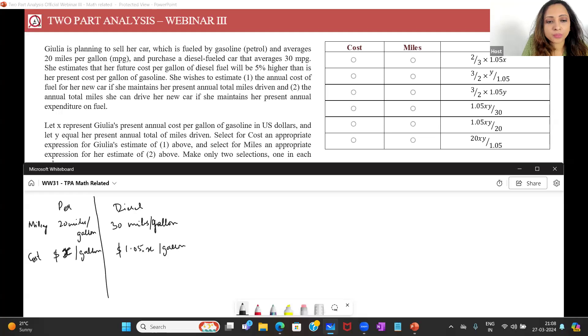And let y equal her present annual total of miles driven. So this is your distance which is going to be y miles per year, annual. I want to be very clear about what is given to me. That is why I'm writing down the units so I don't make a mistake. I know that she drives currently y miles per year because this is the annual distance driven.